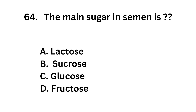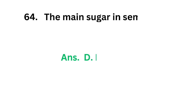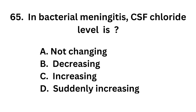Question number 64. The main sugar in semen is: Option A, Lactose; Option B, Sucrose; Option C, Glucose; Option D, Fructose. The main sugar in semen is Fructose.